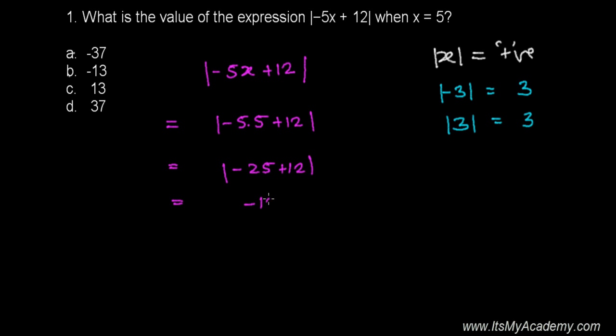-25 and plus 12, that's -13. Now let's find out the absolute value. The absolute value of -13 - as I told you, whether it is -3 or +3, the absolute value is always 3. So similarly, the absolute value of -13 is simply 13. This is our answer. Option C is going to be the answer, +13 is our answer.